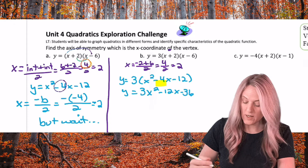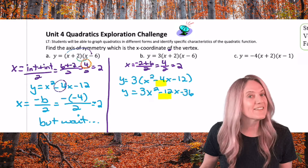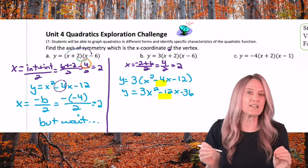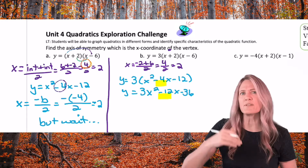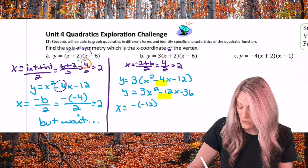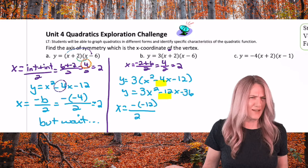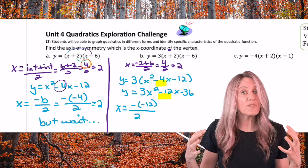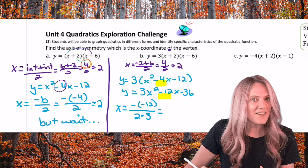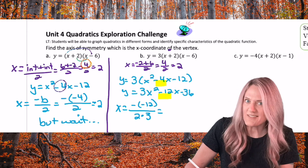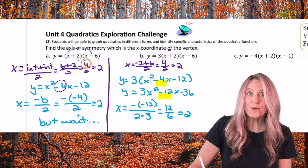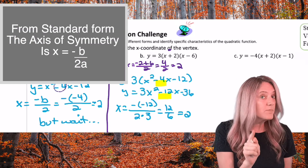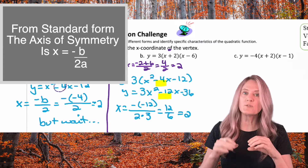So now what happened to our b term? Our b term is currently negative 12, because we multiplied the 3 into the negative 4. Now we're going to get the axis of symmetry: opposite of b divided by 2. But if I just divide by 2 I won't get the correct axis of symmetry — I have to undo that 3 by dividing out the a value. Negative negative 12 is positive 12 divided by 6 is 2. So we have a quick way: negative b divided by 2 times a.